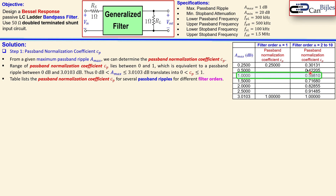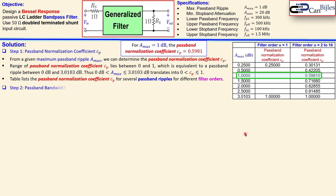Looking at the table for a-max of 1dB, we find the passband normalization coefficient cp is 0.59810. The filter order can be between 2 and 10, but we need more information — specifically about the stopband attenuation — to narrow this down. We will look at a graph for that. So for 1dB passband ripple, we have cp = 0.5981.